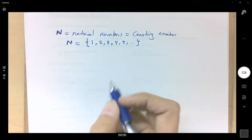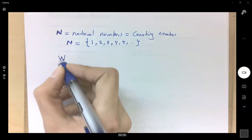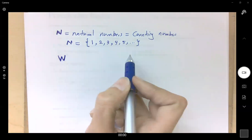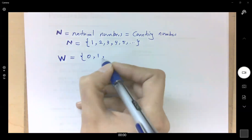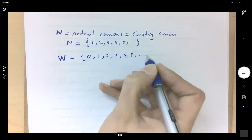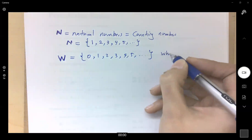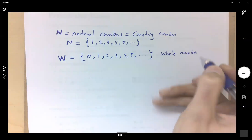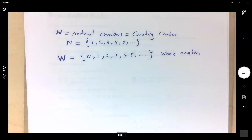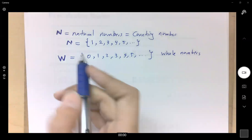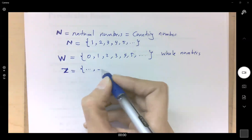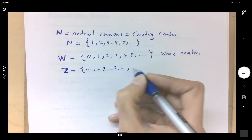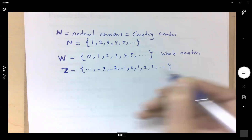Then we define whole numbers W. The first set doesn't have zero in it, so you add zero and define a new set: {0, 1, 2, 3, 4, 5, ...}. Then you notice there are no signs — where is negative one, negative two, negative three? So we expand this into Z, or integers: {..., -3, -2, -1, 0, 1, 2, 3, ...}.